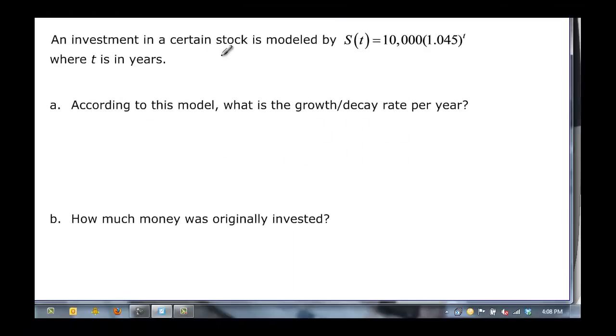Let's look at this one. An investment in a certain stock is modeled by S(t) = 10,000(1.045)^t where t is in years. According to this model, this base is greater than 1, so it's going to be a growth rate per year.